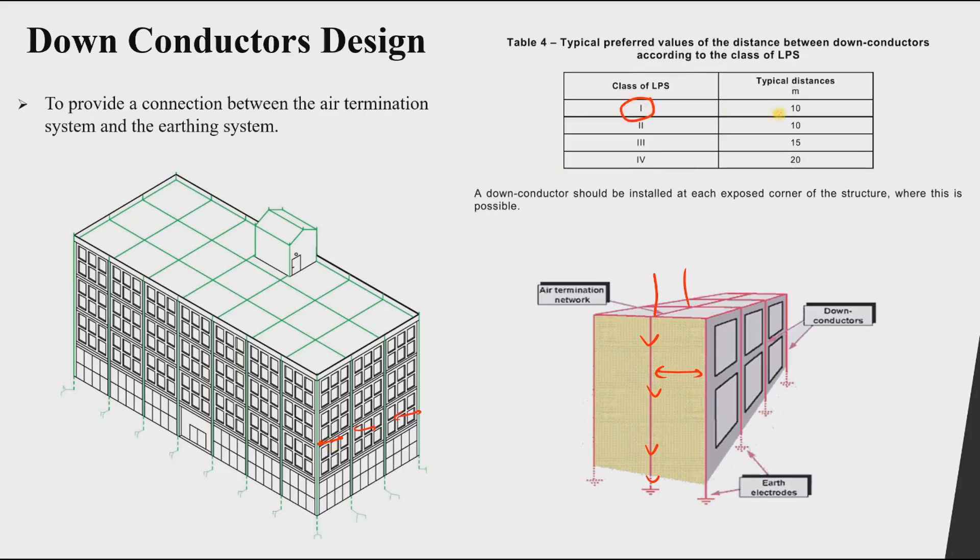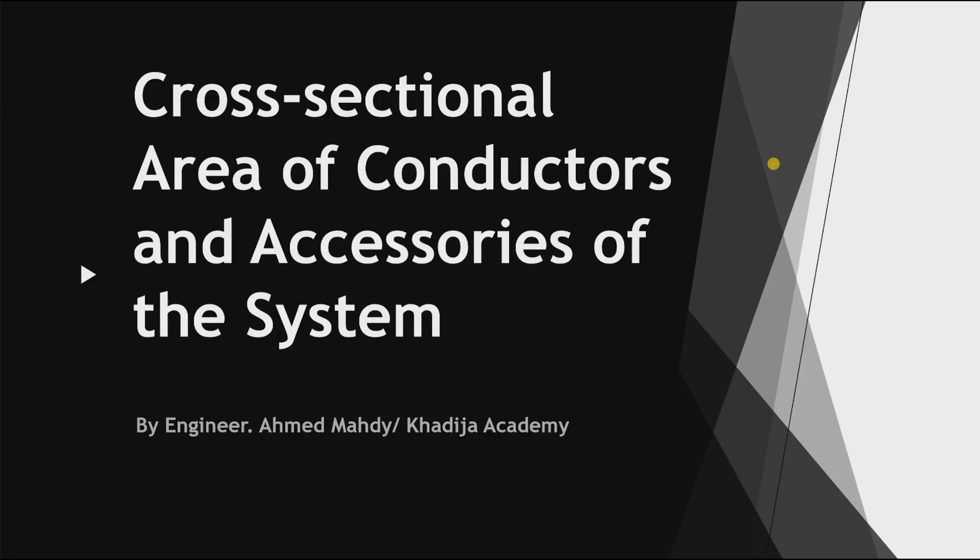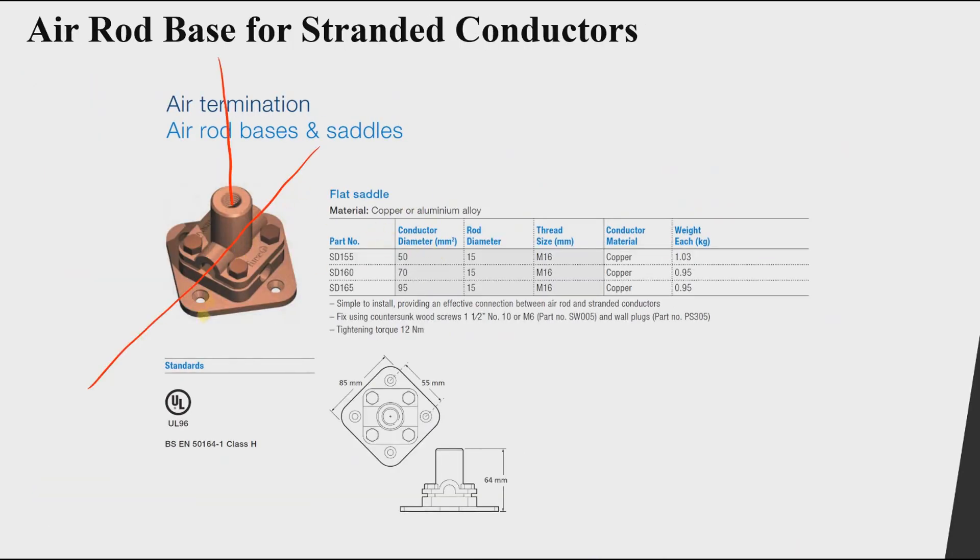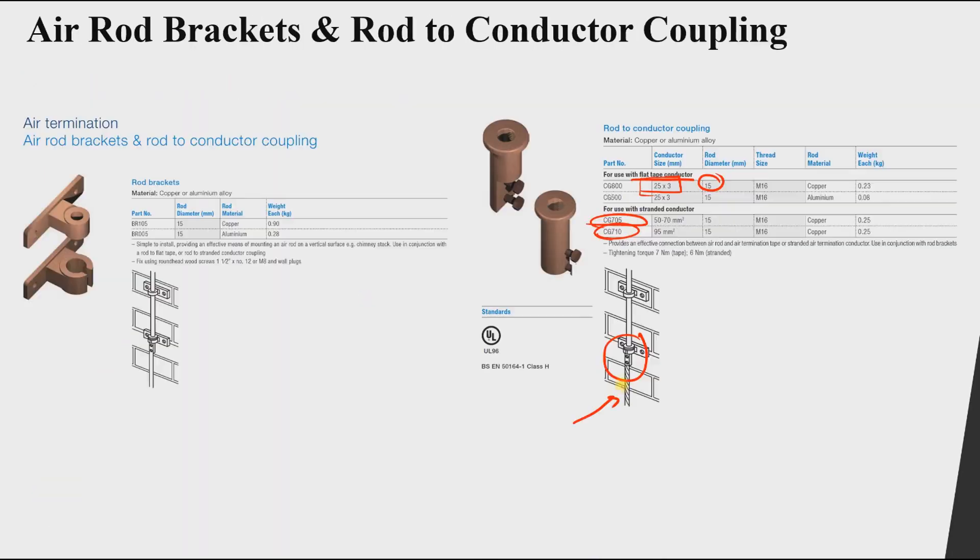We will also learn how to design the down conductors that take the lightning strike from the air terminal or air termination system to the grounding system or the earthing system. In addition to the design of down conductors, we will learn how to select the minimum cross-sectional area required in our components of our system.